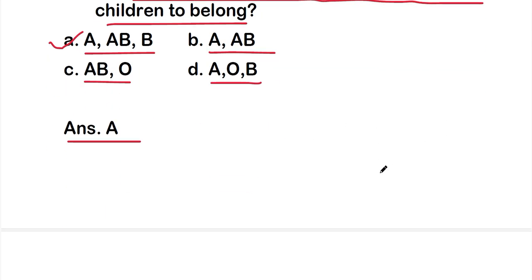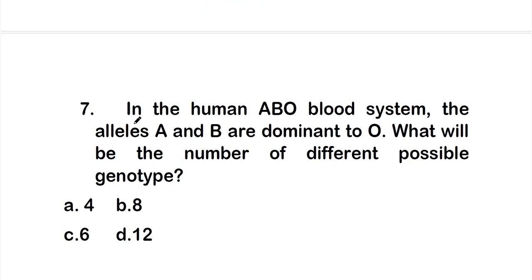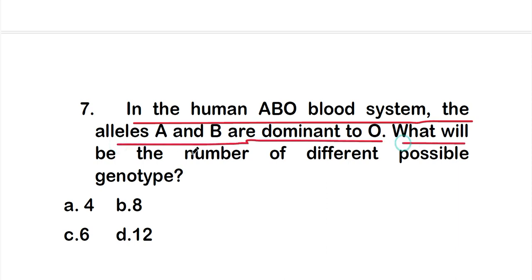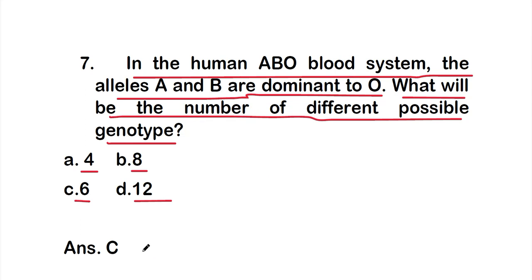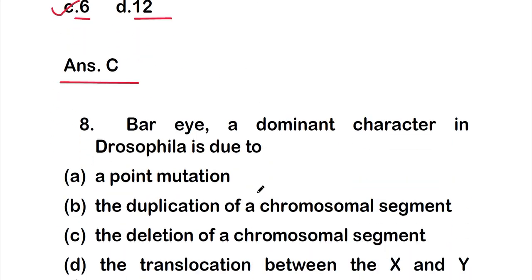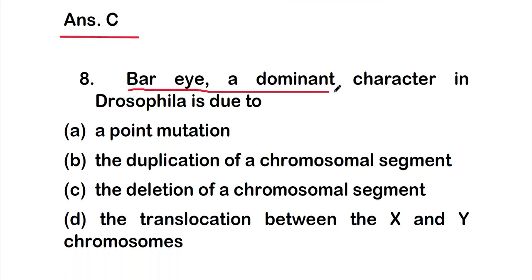Question seven: in the human ABO blood system, alleles A and B are dominant to O. The number of different possible genotypes is 6.